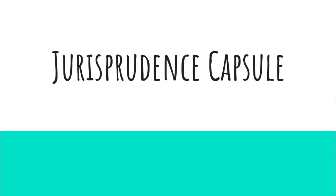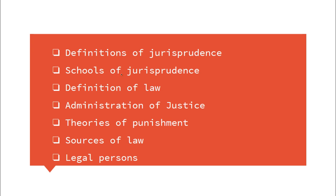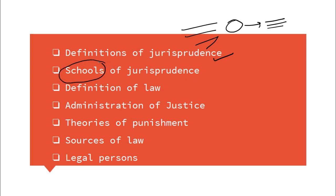Let's see what I have incorporated in this capsule. First, I have covered jurisprudence definitions — not full definitions, but the jurist's name and key-pointed definitions. Then jurisprudence schools: with each jurist there are different origins of law, different thought processes, and different schools of jurisprudence. I have laid down the important jurists and their key points.